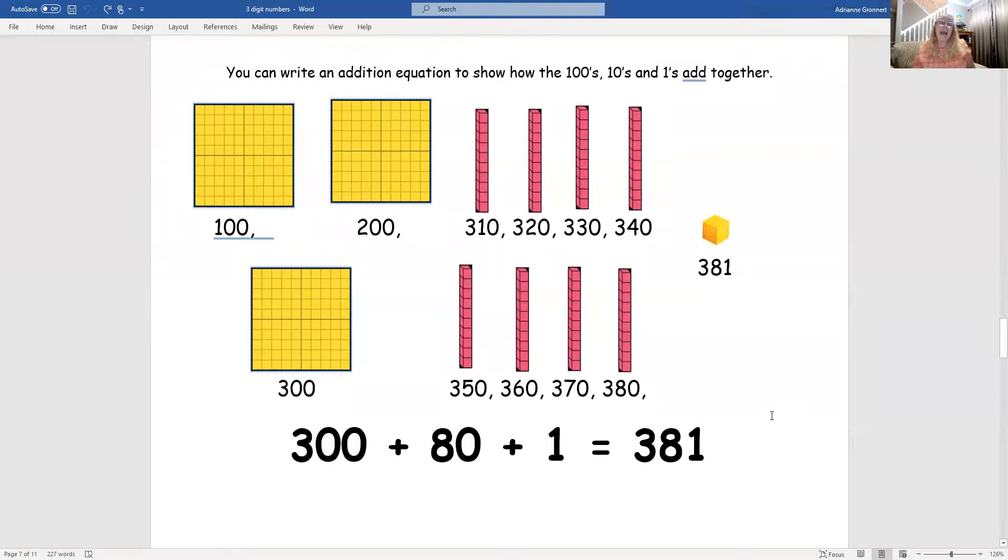We can also write an addition equation to show the hundreds, tens, and ones, and how they add together. Remember, this is also called expanded notation. The way to write that is 300 plus 80 plus 1 equals 381.